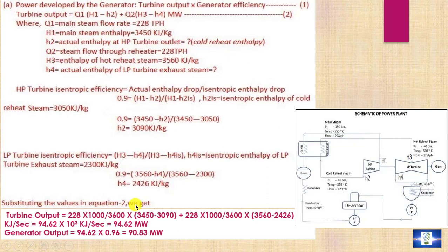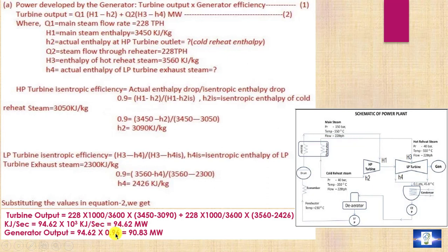Substituting the values, the turbine output equals: main steam flow 228 ton/hr (converted to kg/s as × 1000/3600) × (H1 − H2) = (3450 − 3090), plus 228 × 1000/3600 × (H3 − H4) = (3560 − 2426), giving a turbine output of 94.62 MW. Therefore, the generator output equals 94.62 × 0.96 = 90.83 MW.